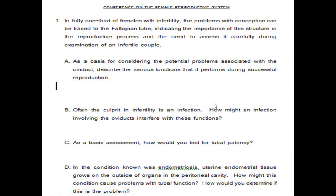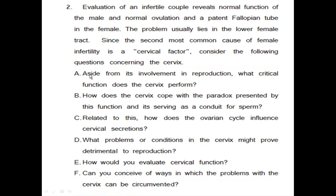This conference was talking about infertility in the female. It asks about the basic functions of the female reproductive tract, how infection may impede the function of the oviduct, and how endometriosis might impede the function of the fimbria and oviduct. The next part concerns the cervix: what does the cervix do, how does it cope with the paradox of normally not letting anything through but then allowing sperm through, how the ovarian cycle influences cervical mucus, what problems could arise with the cervix, and how those might be overcome.